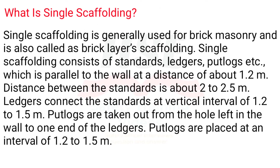What is single scaffolding? Single scaffolding is generally used for brick masonry and is also called bricklayer's scaffolding. It consists of standards, ledgers, and putlogs, placed parallel to the wall at a distance of about 1.2 meters. Distance between standards is about 2 to 2.5 meters. Ledgers connect the standards at vertical intervals of 1.2 to 1.5 meters. Putlogs are taken out from holes left in the wall to one end of the ledgers, placed at intervals of 1.2 to 1.5 meters.